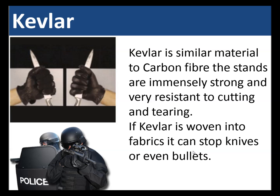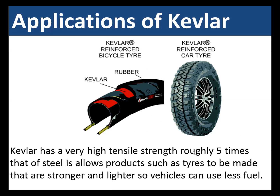Kevlar is a similar material to carbon fiber. The strands are immensely strong and very resistant to cutting and tearing. If Kevlar is woven into fabrics it can stop knives or even bullets. An application of Kevlar is tires — it has a high tensile strength roughly five times that of steel, allowing products such as tires to be made which are stronger and lighter than steel, so vehicles can use less fuel.